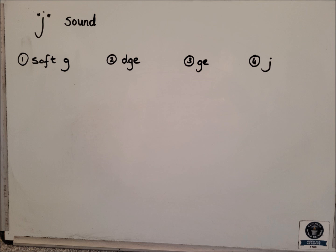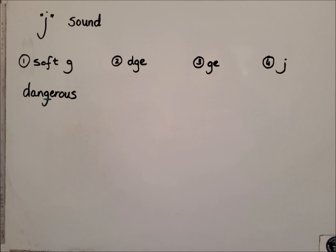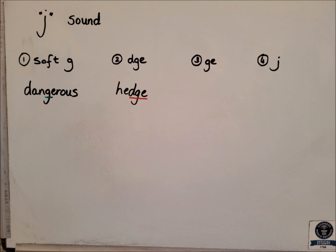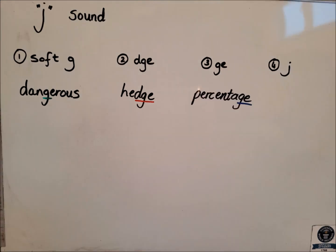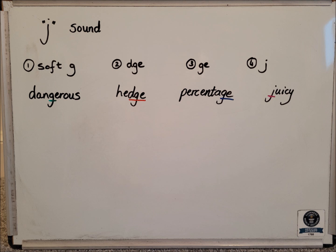What I would like you to do is have a think about what words would fit those rules. I've given you some examples. My first one for soft G is the word 'dangerous'. My first example for DGE is 'hedge'. For GE I have put 'percentage' and for J on its own I have got 'juicy'. Pause the video here and see if you can think of maybe at least five or six words for each of these categories. Some might be trickier than others. I would recommend for the DGE one, maybe thinking of words that rhyme with hedge — that might be a good way to start. Come back and we'll have a look at examples together.